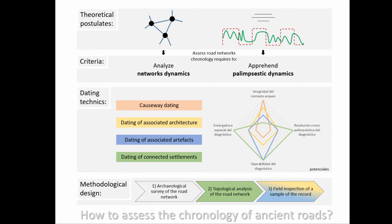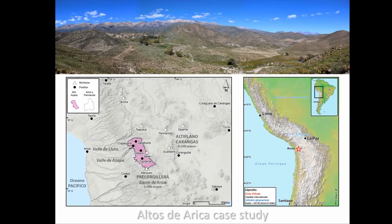For these reasons, we are implementing a research design based on topological analysis and simulation. I will briefly present the ongoing network analysis based on the first case study of a Marie Curie action called RONNET. This case study is based on a geospatial archaeological record of a 1,000 square kilometer basin located in arid regions of northern Chile.